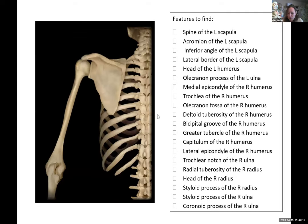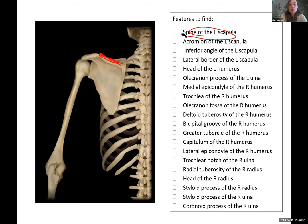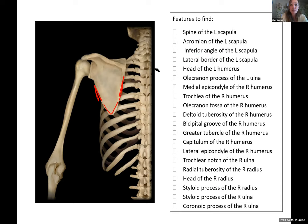Spine of the scapula — we can name from this picture: the spine of the left scapula is this part, the acromion of the left scapula is this part, inferior angle down here, and then we have our lateral border of the left scapula. Then we have the head of the left humerus.